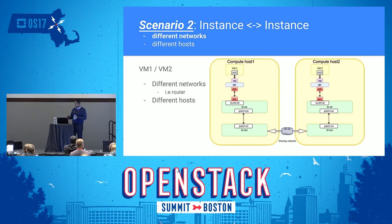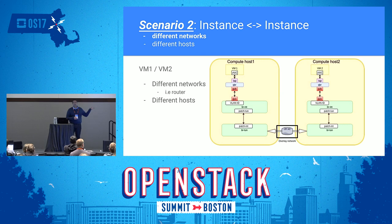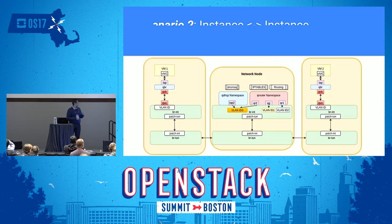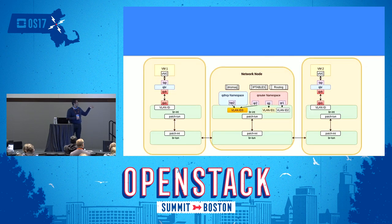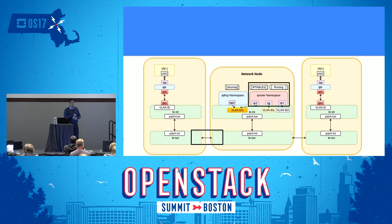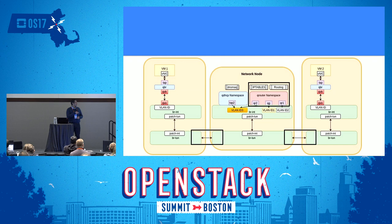To summarize the QRouter: there is one QR interface per subnet attached, QG is the default gateway interface to the public network, network namespaces keep each router totally isolated, and any subnet change requires going through the router regardless of whether instances are on the same host or different hosts.